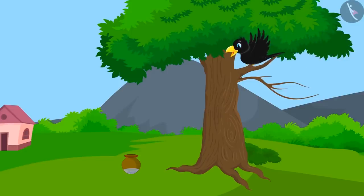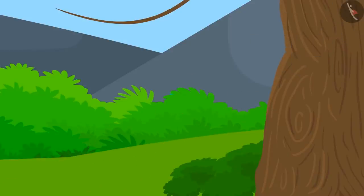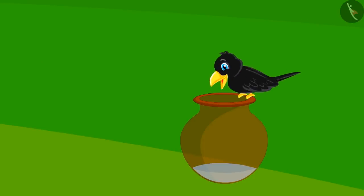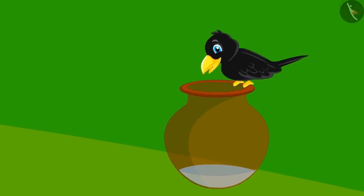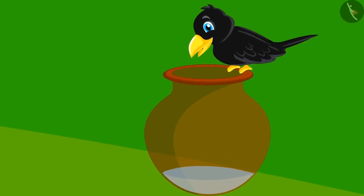The crow was very happy and flew to the pitcher. But the poor crow became very sad. The water in the pitcher was very low. The crow's beak could not reach the water.